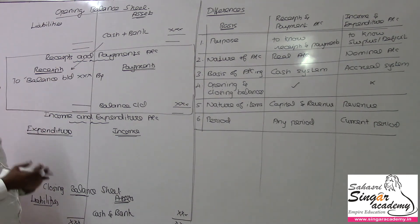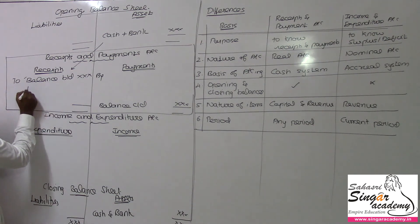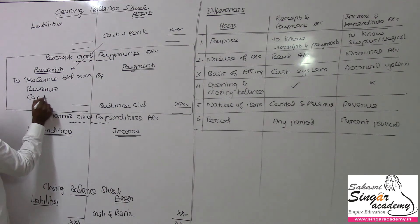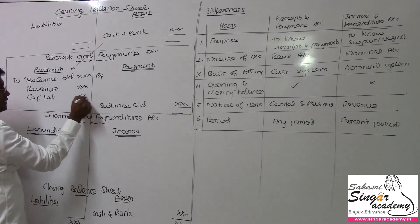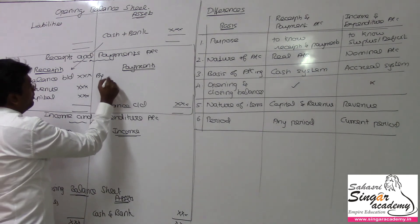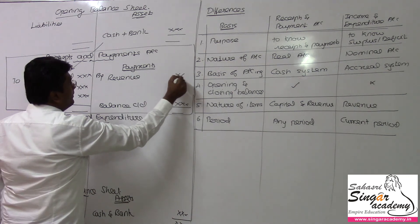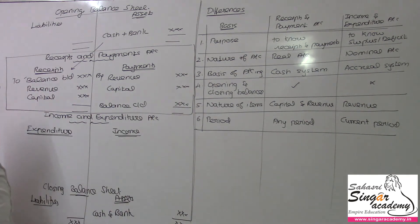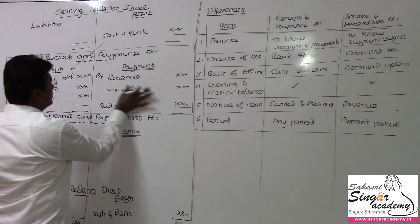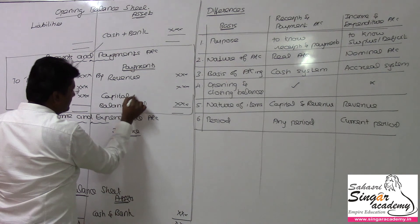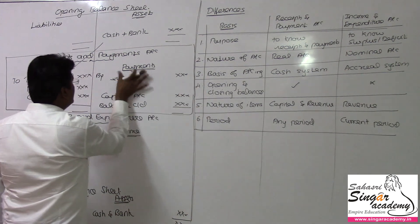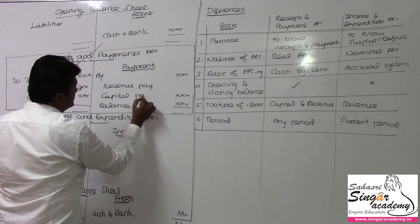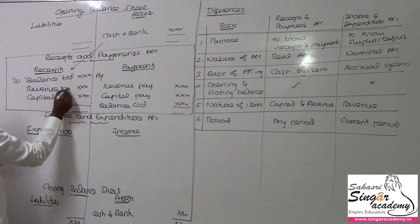On the receipts side, we classify items into capital receipts and revenue receipts. Similarly, on the payments side, we have capital payments and revenue payments. Capital payments and capital receipts will go from the opening balance sheet to the closing balance sheet.